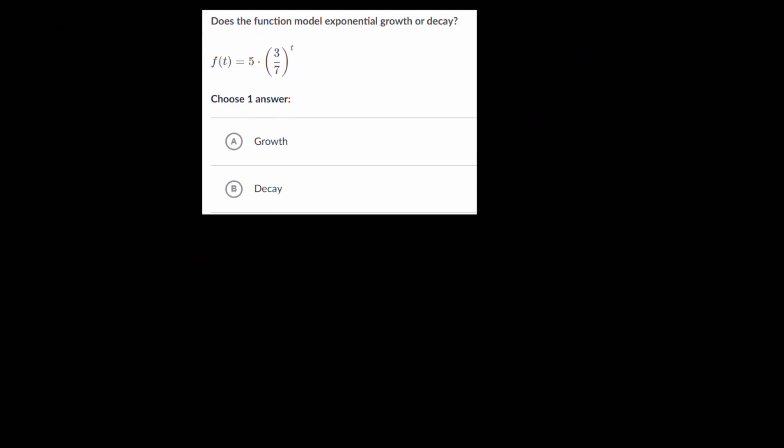We'll do three more example problems. And once you get the hang of these, they're fairly quick. So notice this one, we're looking at the base of our exponential expression, and it's a fraction. So because this is a fraction, and it's a positive exponent, that is important. If the exponent is negative, that changes the pattern a little bit. So since we have a fraction for our base, this is going to be decay.